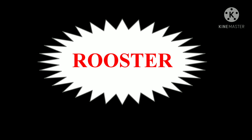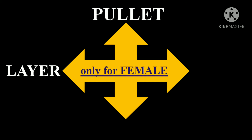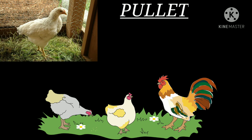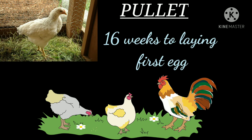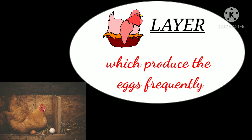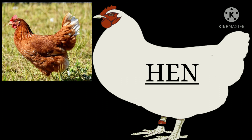Now let's see our second category — terms only used for female birds. In this category we are going to study about pullet, layer, hen, and broody hen. First, pullet — a female bird from 16 weeks to laying her first egg. Then layer — a mature female bird which produces eggs frequently. Then hen — a mature female bird of more than six months of age.